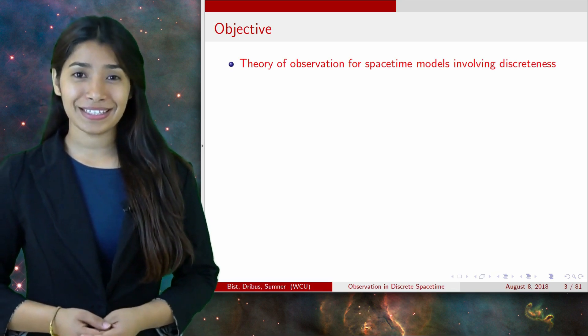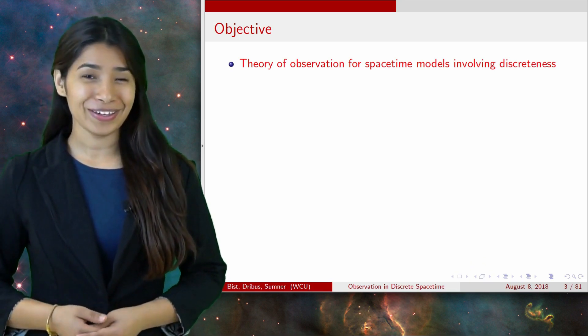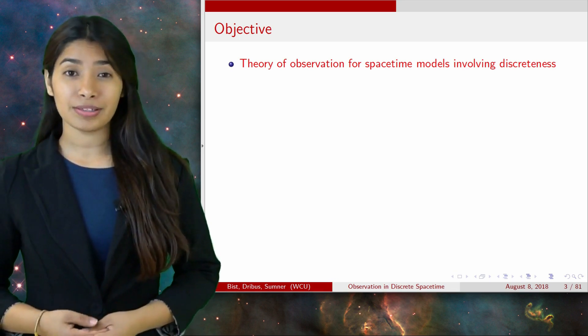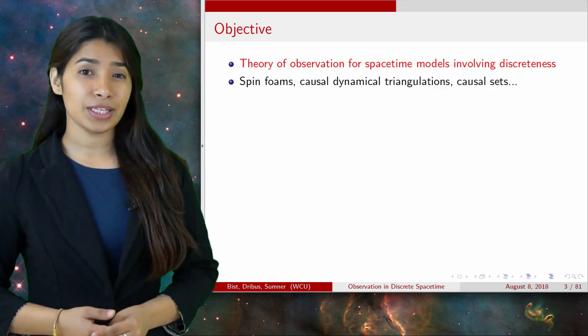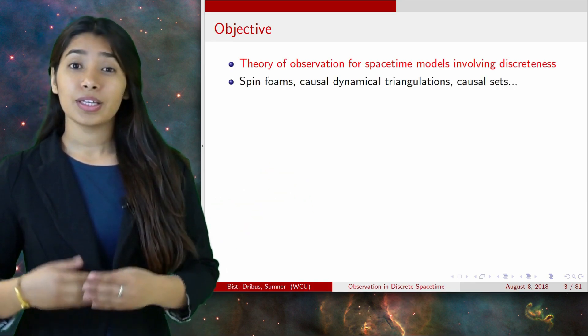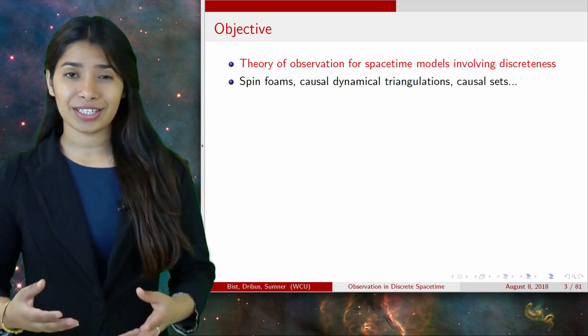I'm not sure which model I'll be studying in graduate school. Maybe I'll invent my own. The most popular models right now are spin-form, causal dynamic triangulation, and causal sets. The main purpose of these models is to study quantum gravity.